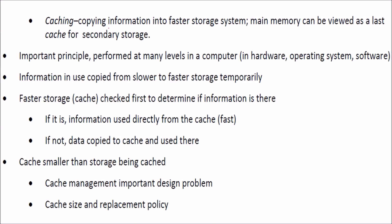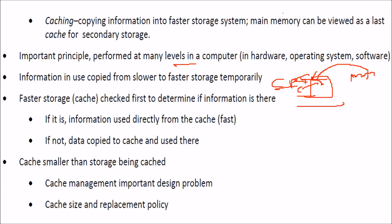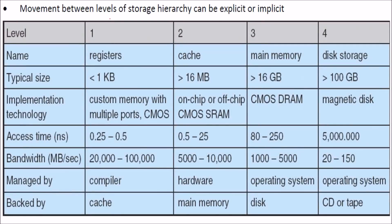Cache is a principle where if something is in cache and the CPU needs it, it takes the content from cache first, because cache is very low-level memory very close to the CPU. If a cache miss occurs, the content is fetched from the main memory. This makes access faster. The movement between levels of storage hierarchy can be explicit or implicit.